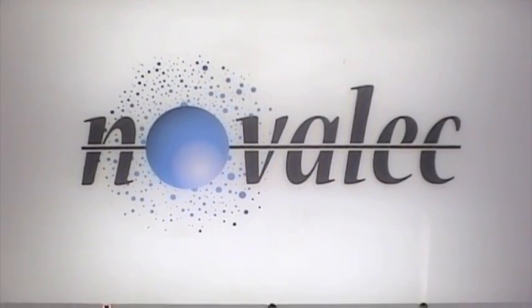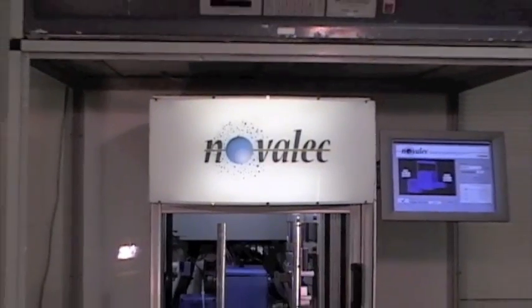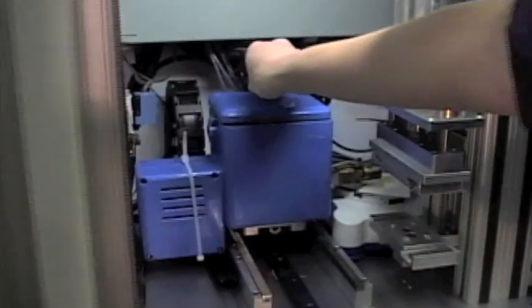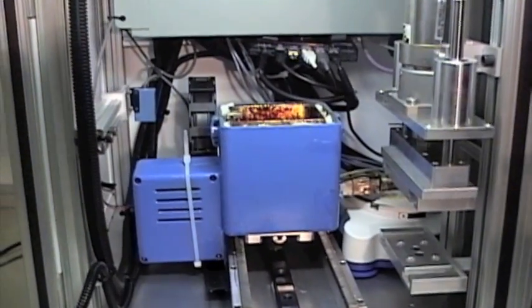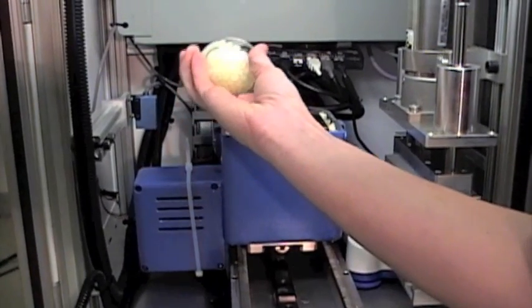The Novelec hot melt instrument is designed to test hot melt adhesive in a way that revolutionizes current testing practices. Novelec tests the strength of different types of hot melt glue by measuring the pull force needed to separate the glue with a load cell.